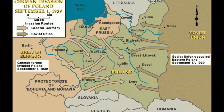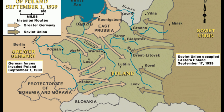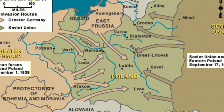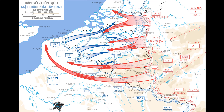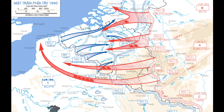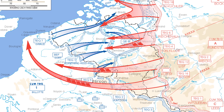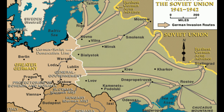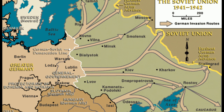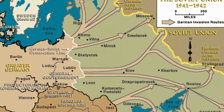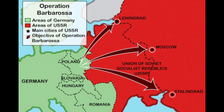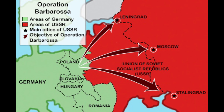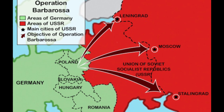Germany's invasion of Poland set off the conflict, resulting in declarations of war by the United Kingdom and France against Germany. Using the Blitzkrieg tactic, multiple countries were occupied swiftly. Subsequently, Nazi Germany's invasion of the Soviet Union opened the Eastern Front.